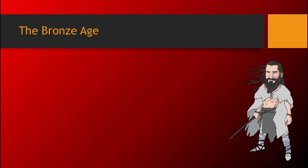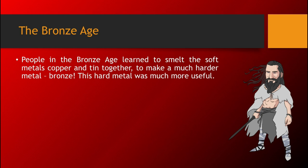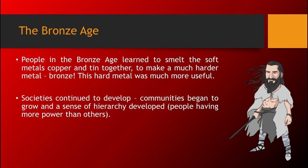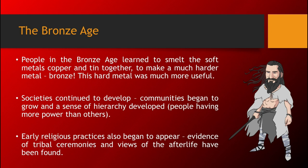The Bronze Age. The people in the Bronze Age learned to smelt the soft metals copper and tin together to make a much harder metal, bronze. This hard metal was much more useful, so the Bronze Age represents a lot of progress compared to the Stone Age. Societies continued to develop. Communities began to grow and a sense of hierarchy developed — meaning people having more power than others. Early religious practices also began to appear. Evidence of tribal ceremonies and views of the afterlife have been found.